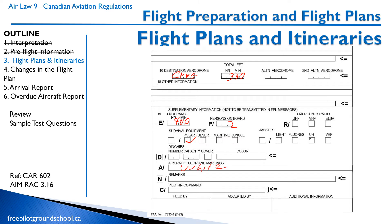In the remarks section, air traffic control often wants your cell phone number, so if they have to look for you, the first thing they do is call your cell phone. That's usually a giveaway — 'Oh, we found him, he was at home, he forgot to close his flight plan.' Then you put your pilot in command name and license number.